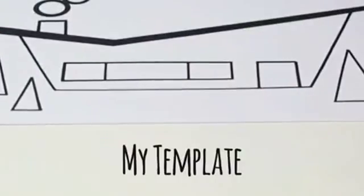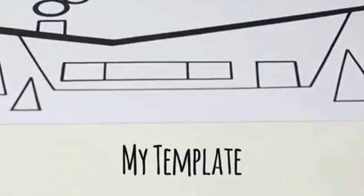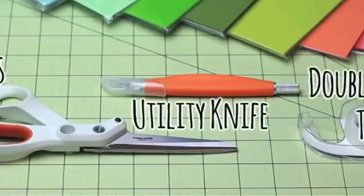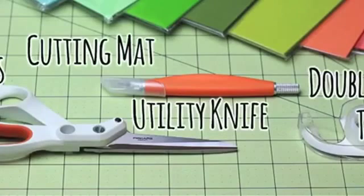You'll need my mid-century house template. You can find the link for it in the description below. You'll also need scissors, a utility knife, double-sided tape, a cutting mat, and colored cardstock.